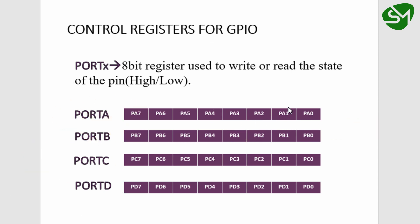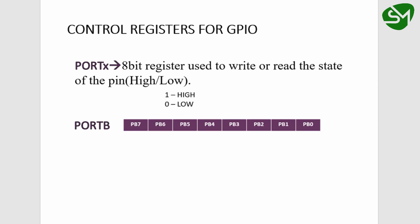These are the individual bits from PA0 to PA7, PB0 to PB7, PC0 to PC7, and PD0 to PD7. Consider that all the pins of port B are configured as output, so we can make all these pins high or low using the port B register. If I write a value 1 to a particular bit in the port B register, that bit will be high, and if I write 0 to that particular bit, that bit will be low.